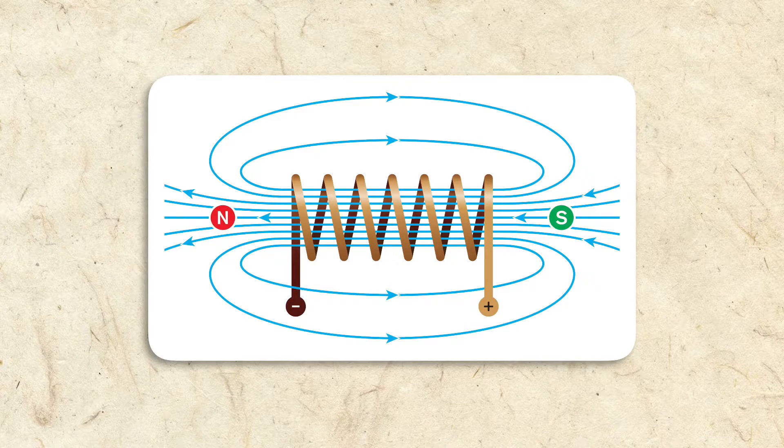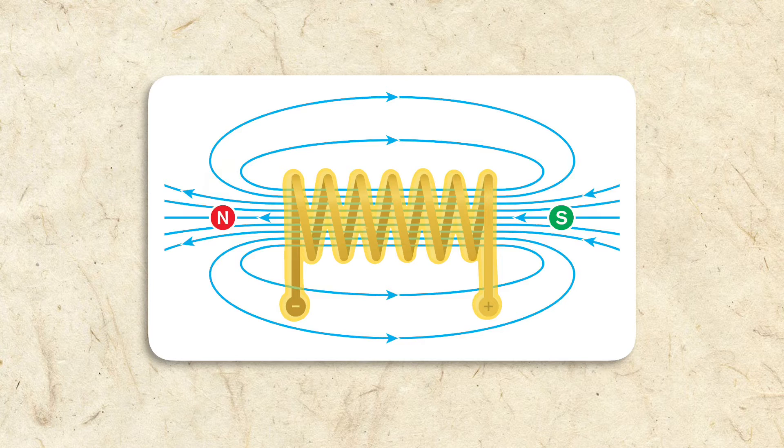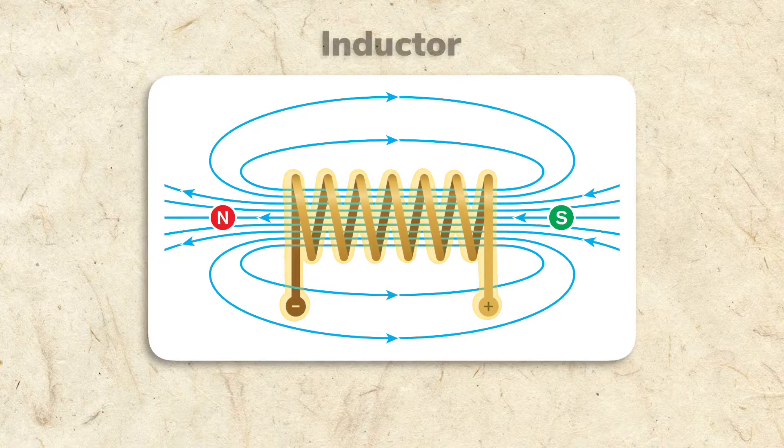The electromagnet in our speaker is called the field coil because it creates a magnetic field from a coiled wire. Another name for a coiled wire is an inductor.